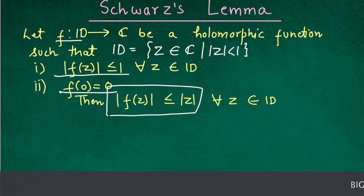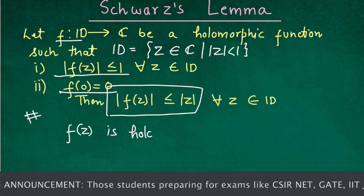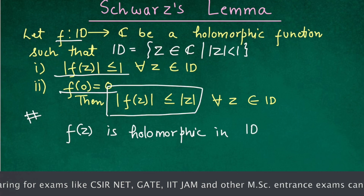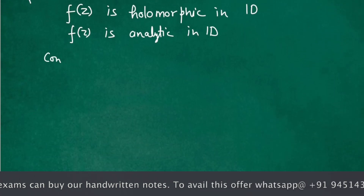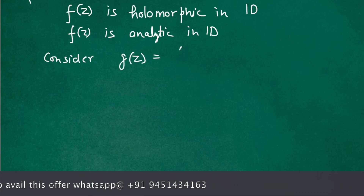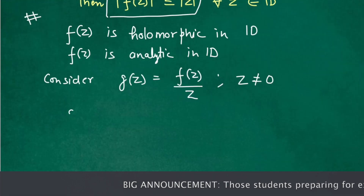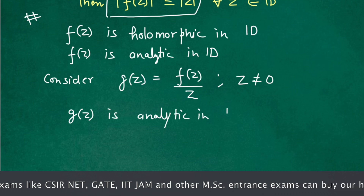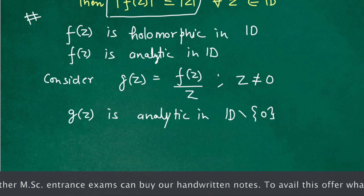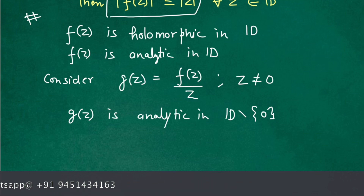Now let's prove this theorem. It is given that f(z) is holomorphic, which means f(z) is analytic in D. Let's consider a function g(z) = f(z)/z, provided z is not equal to 0. Since f(z) is analytic in D, the function g(z) is analytic in disk D except at the origin. We are not sure about the analyticity of g(z) at the origin, so let's figure out whether g(z) is analytic at the origin or not.